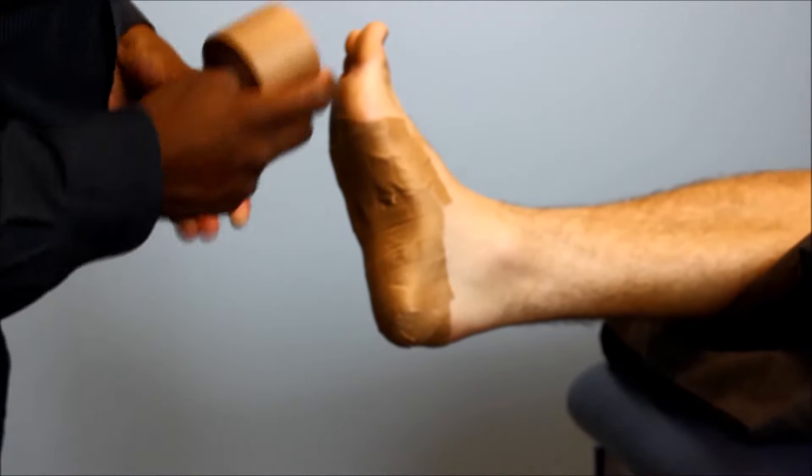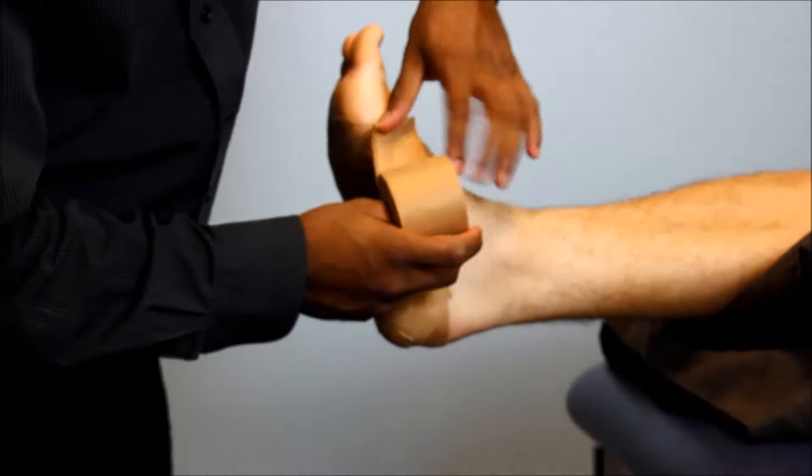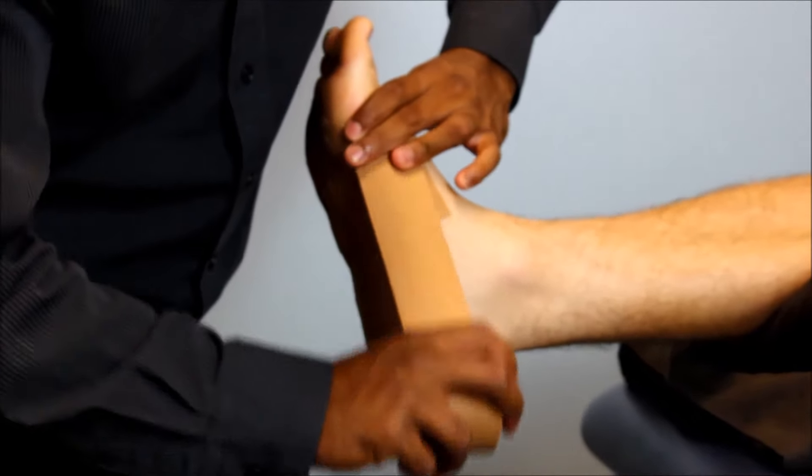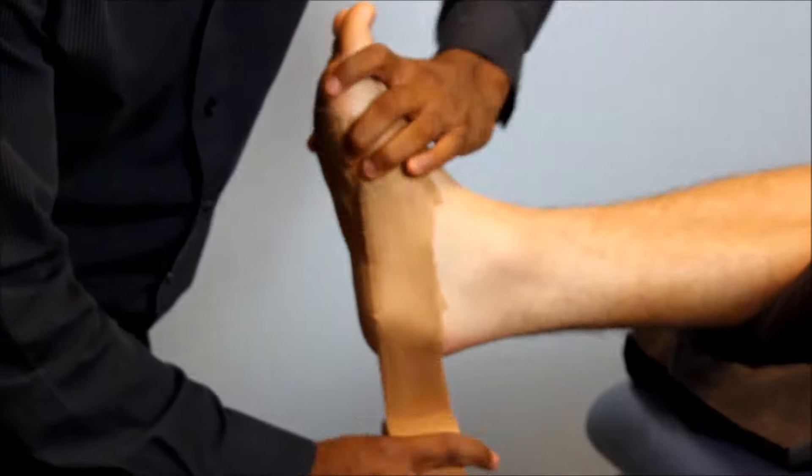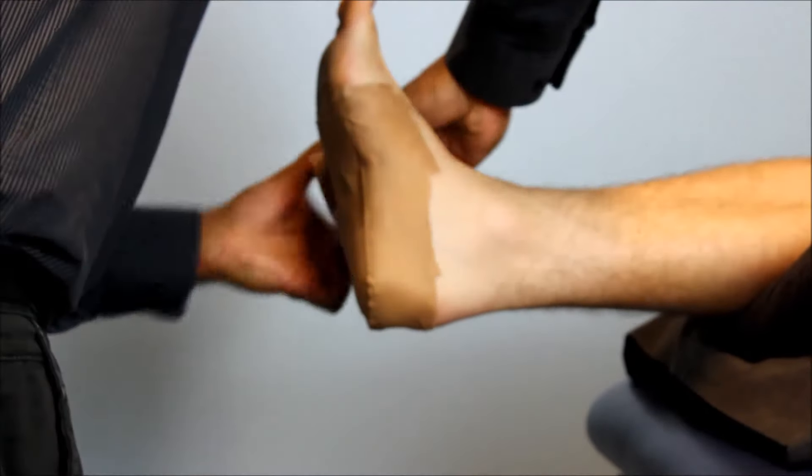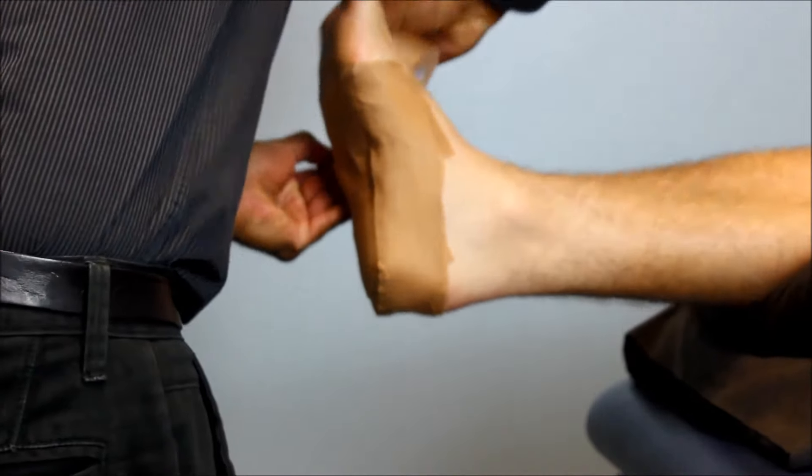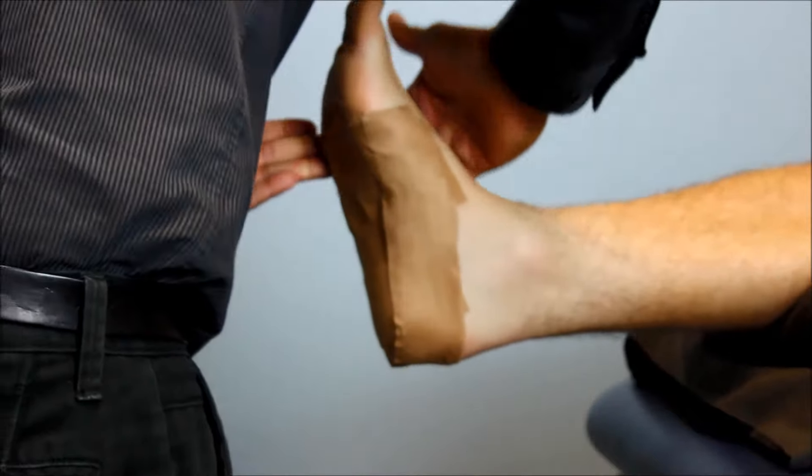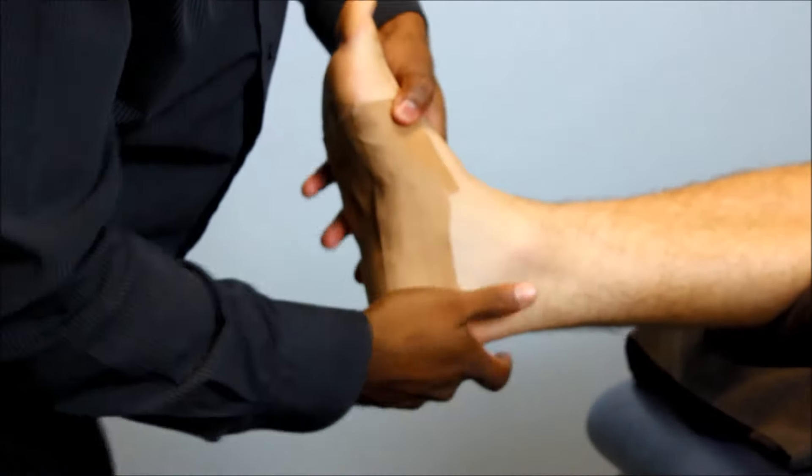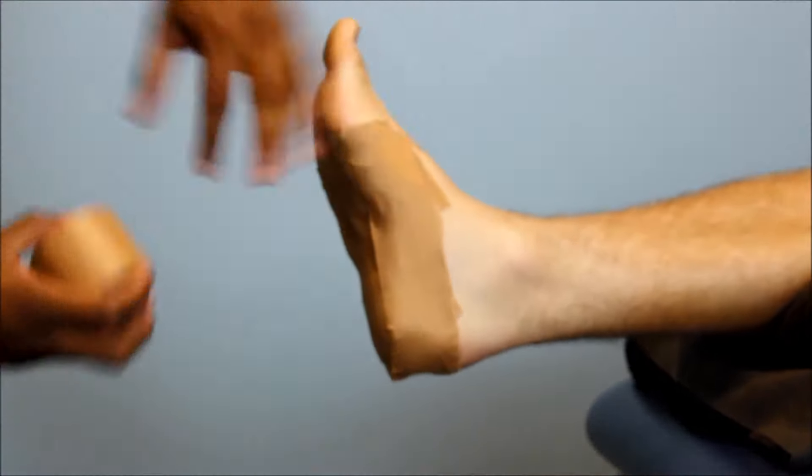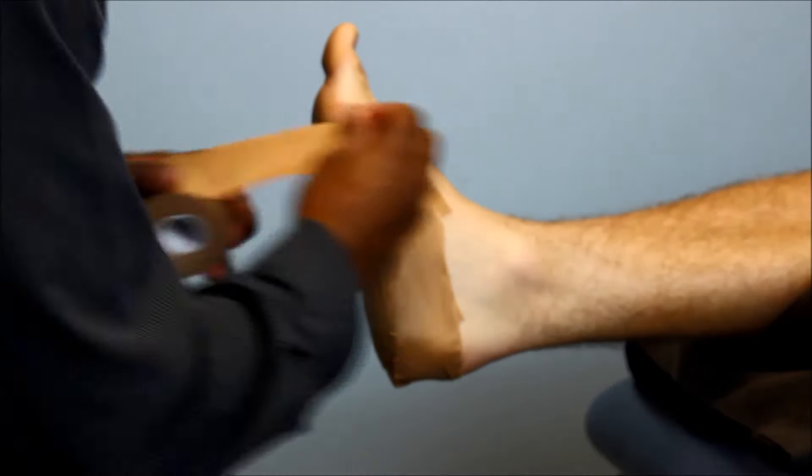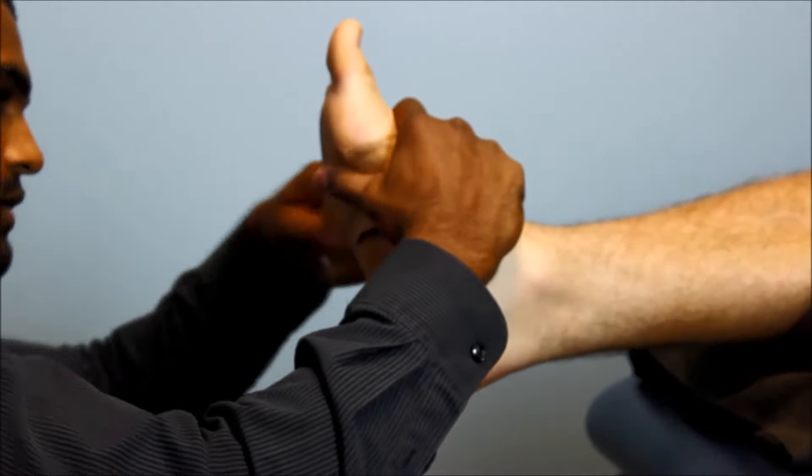So now you just finish off with locks, so basically repeating the anchors over the top. And with the lock at the bottom of the foot, start from the inside to the outside.